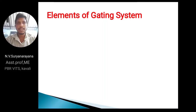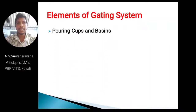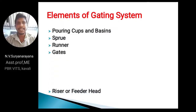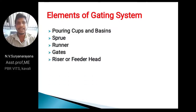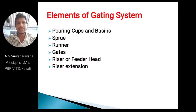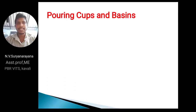Now coming to the elements of the gating system. The elements are: pouring cups and basins, sprue, runner, gates, riser or feeder head, and riser extension. These are all the elements of the gating system.